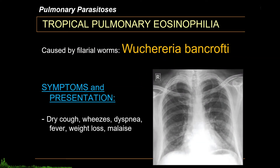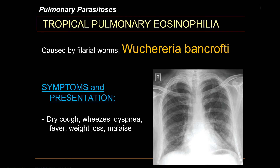Tropical pulmonary eosinophilia, or TPE, is caused by filarial worms, particularly Wuchereria bancrofti. It is caused by persistent microfilaremia which affects the pulmonary structure. The most common chest radiography finding is bilateral, fine, diffuse reticulonodular opacities in the middle and lower lung zones.